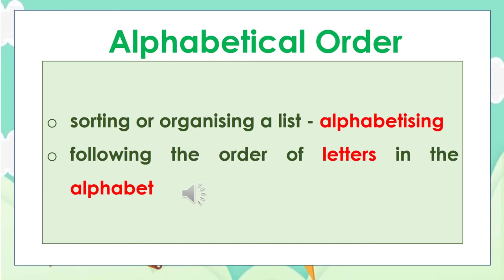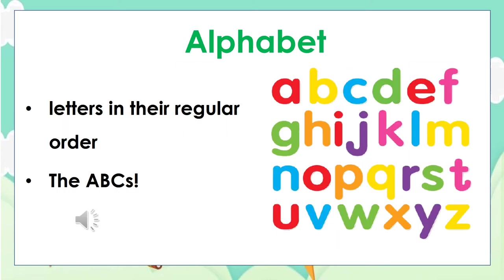My dear children, arranging or sorting a list according to alphabetical order is called alphabetizing. So when we alphabetize a list, we simply place the letters in regular order — the regular ABC.